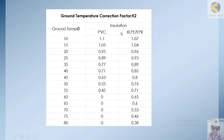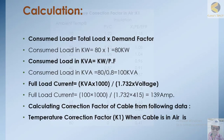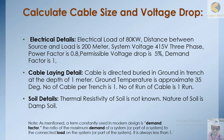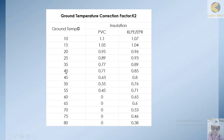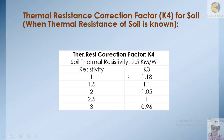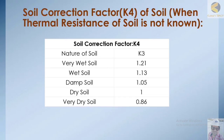Similarly, we have a ground temperature correction factor. The ground temperature is 35 degrees centigrade. Note that ambient temperature is normally taken as 40 degrees centigrade in hot areas. For the soil resistivity correction factor K4, since we don't know the resistivity of the soil but the soil condition is wet or damp, we take a correction factor of 1.13.